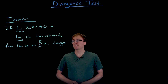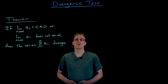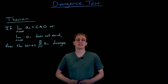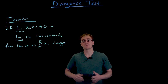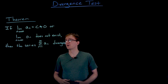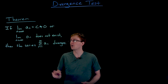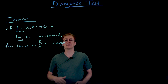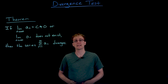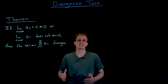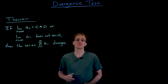When using the divergence test to see if a series like the sum from n equals 1 to infinity of a sub n diverges, we look at the limit of the terms in that series — the limit as n approaches infinity of a sub n. If that limit equals some constant c that is not zero, or if the limit does not exist, that is enough to guarantee that the series diverges.